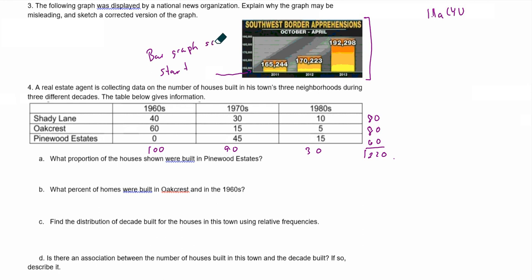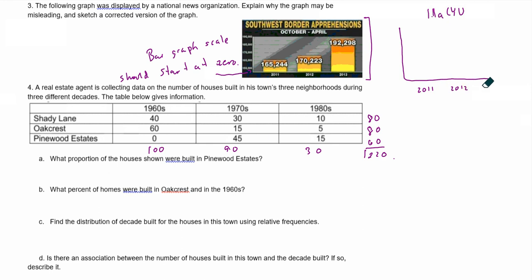The bar graph scale should start at zero because that makes the comparison accurate. So in order to fix this, we're going to draw the years 2011, 2012, and 2013, starting at zero. We'll go up by 50 thousands — so 50,000, 100,000, 150,000, and 200,000. I'll label it in thousands over here.